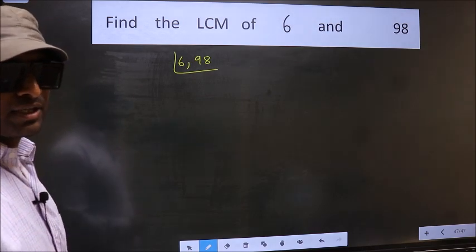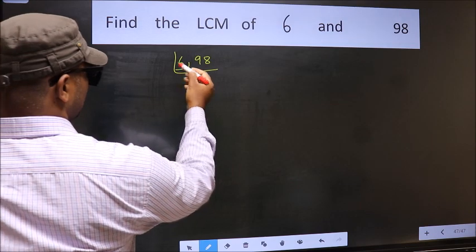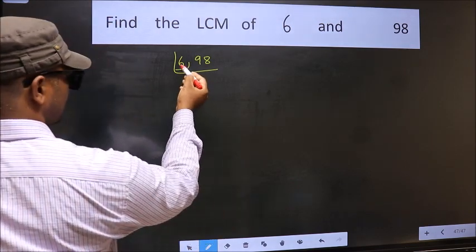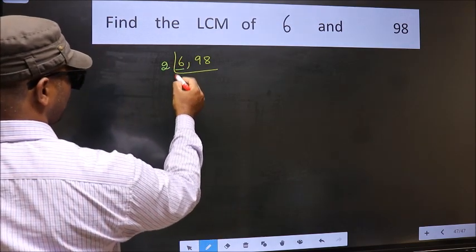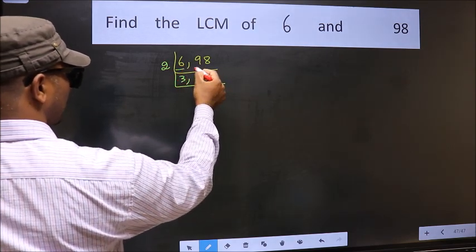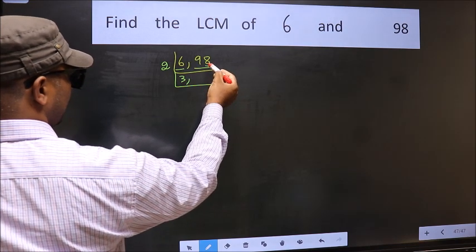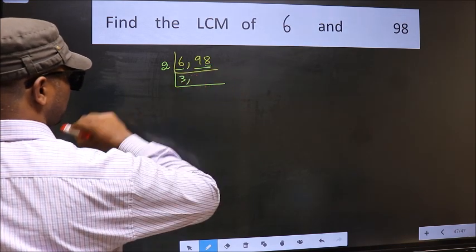Now you should focus on the first number which is 6 here. 6 is even, so take 2. When do we get 6 in 2 table? 2, 3, 6. Now the other number 98. Last digit 8, even, so this number is divisible by 2.